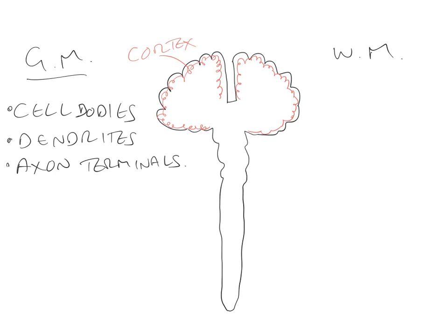The next place where we see grey matter is deep down in the cerebral hemispheres, where we see a whole load of discrete, usually bilaterally symmetrical regions or islands of grey matter sitting deep down in the hemispheres and in the brainstem. These are called nuclei. The nuclei of the brain have many different functions: some relay information going down to the cord, some relay information going up to the cortex, and some are involved in other aspects of subcortical processing.